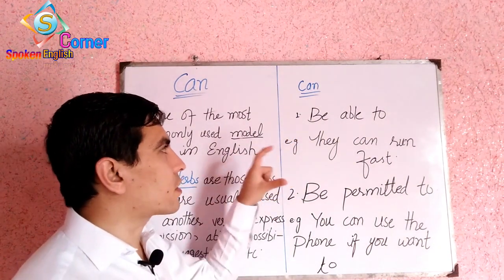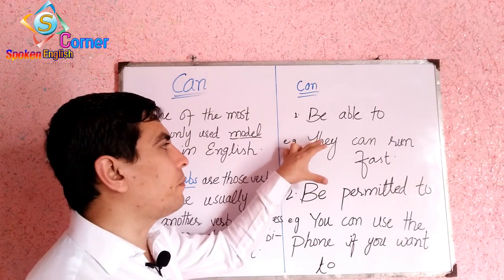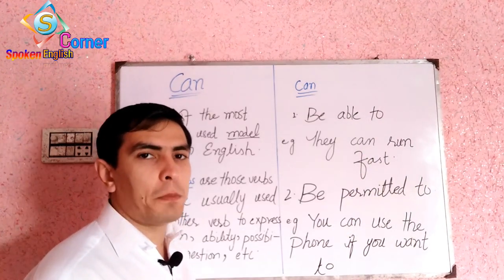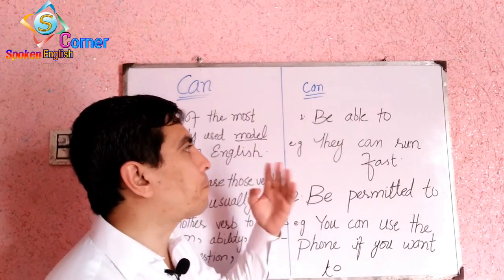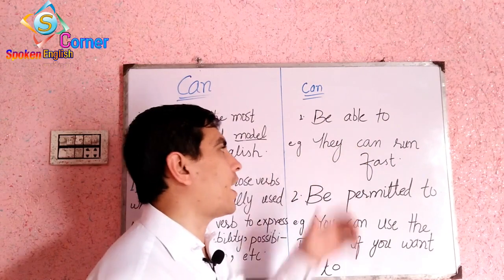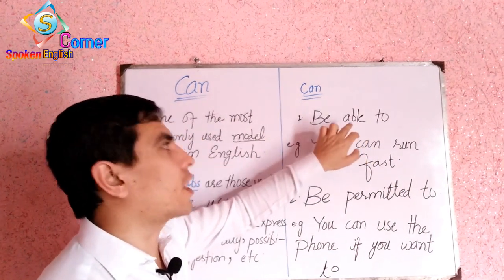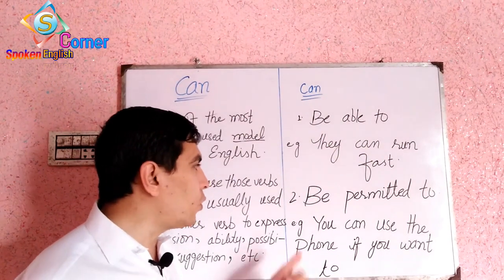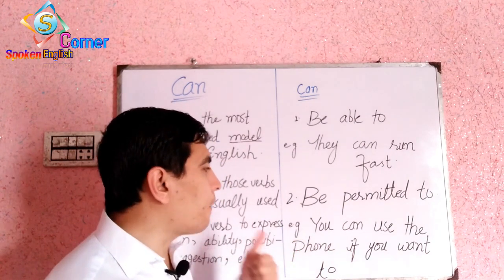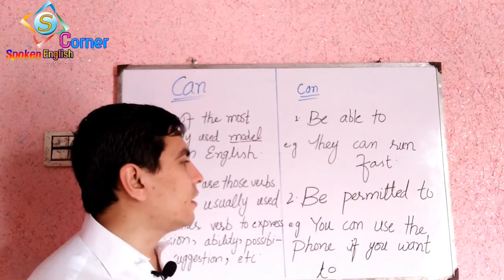Here I have taken two statements: number one is 'be able to,' and the other one is 'be permitted to.' The first example is 'they can run fast,' which shows the present ability of someone. The statement 'be able to' carries the sign of ability. The second statement is 'be permitted to,' and the example for it is 'you can use the phone if you want to,' which shows the sign of permission.